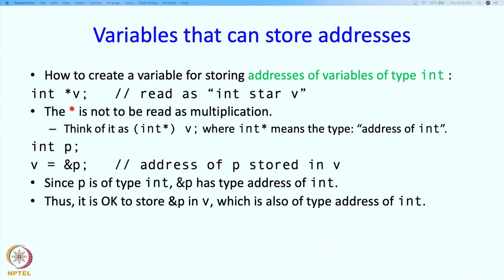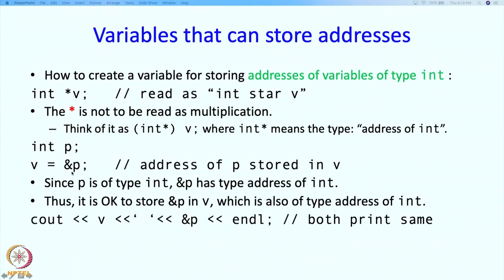Now consider what happens if I write v = p. V is a variable of type 'address of int', but p is not an address — p is an int. C++ says that both of them may be bit strings, but it does not think you really want to mix values and addresses. There is no occasion where we really want to mix values and addresses, so C++ will flag it as an error during compilation.